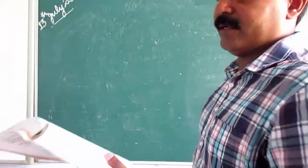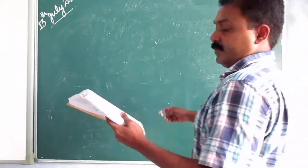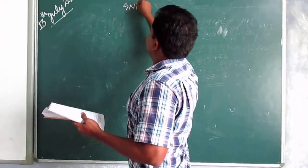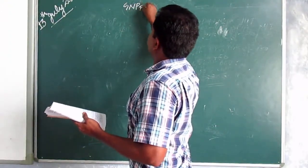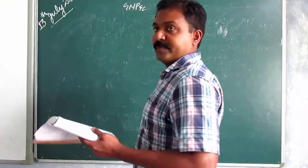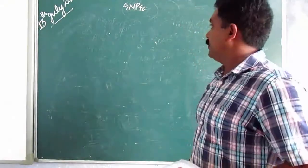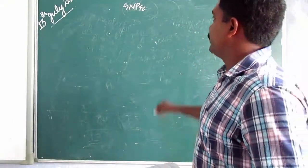The third one: we need to calculate GNP_FC from NDP_MD. We are going from NDP_MD — which is the highest aggregate given — up to GNP_FC.